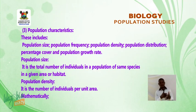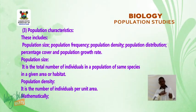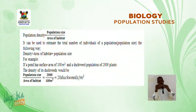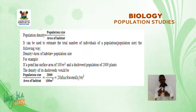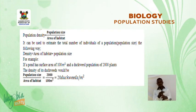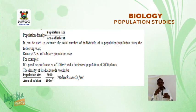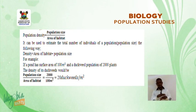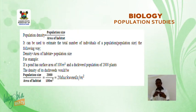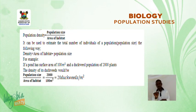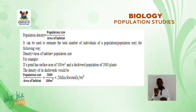Population Density is the number of individuals per unit area. Mathematically, population density equals population size divided by area of habitat. It can also be used to estimate population size: density × area of habitat = population size. For example, if a pond has a surface area of 100 m² and a duckweed population of 2,000 plants, the density equals 2,000 ÷ 100 m² = 20 duckweeds per m².